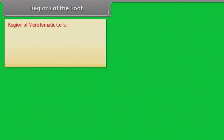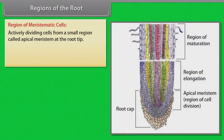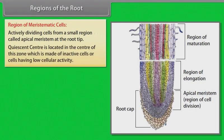Region of meristematic cells: actively dividing cells form a small region called the apical meristem at the root tip. The quiescent center is located in the center of this zone, which is made of inactive cells or cells having low cellular activity.